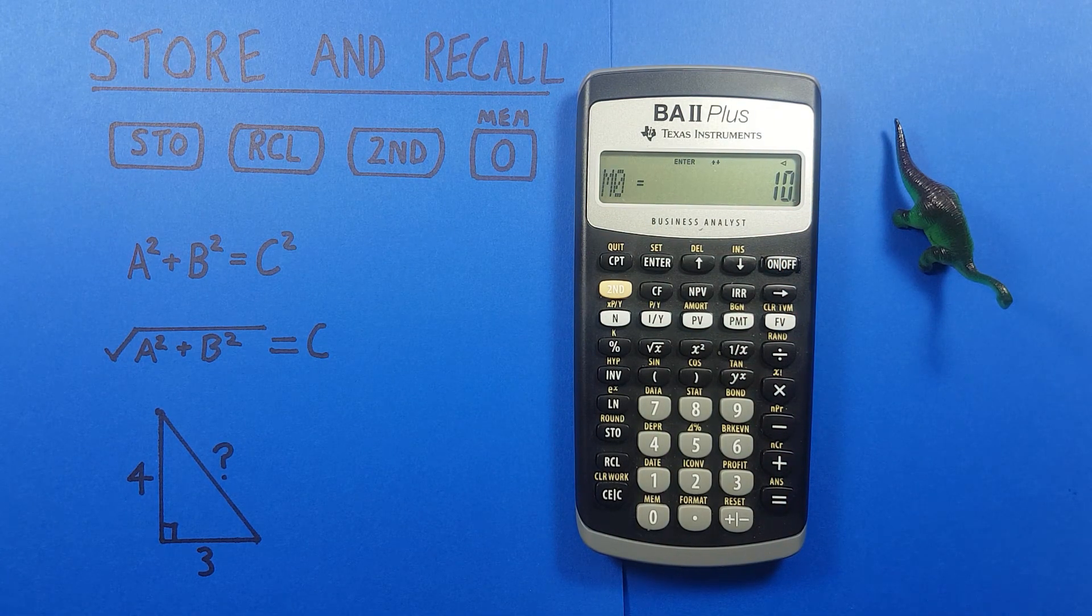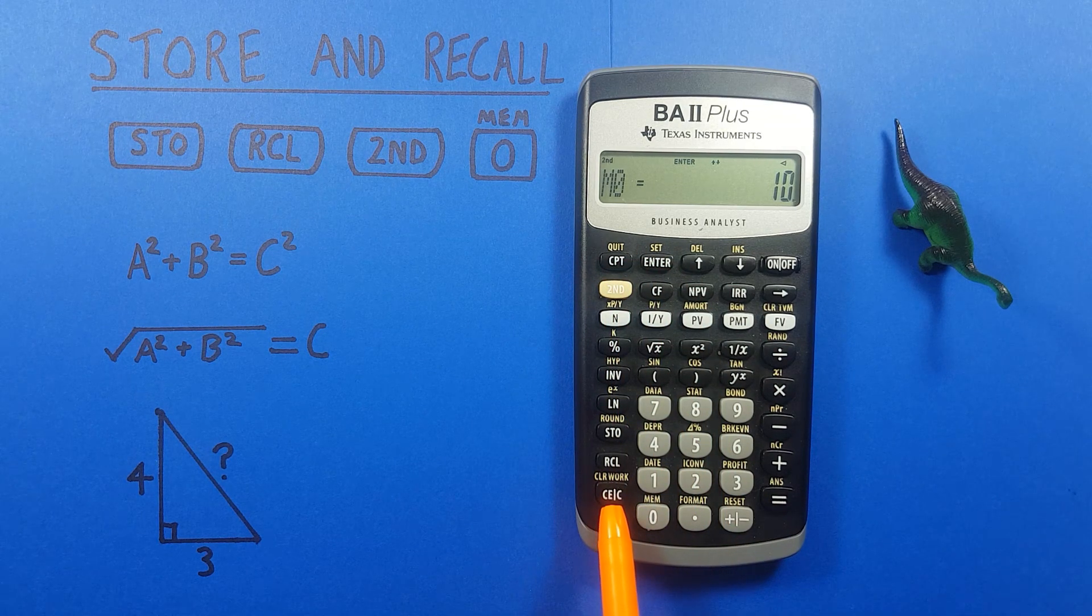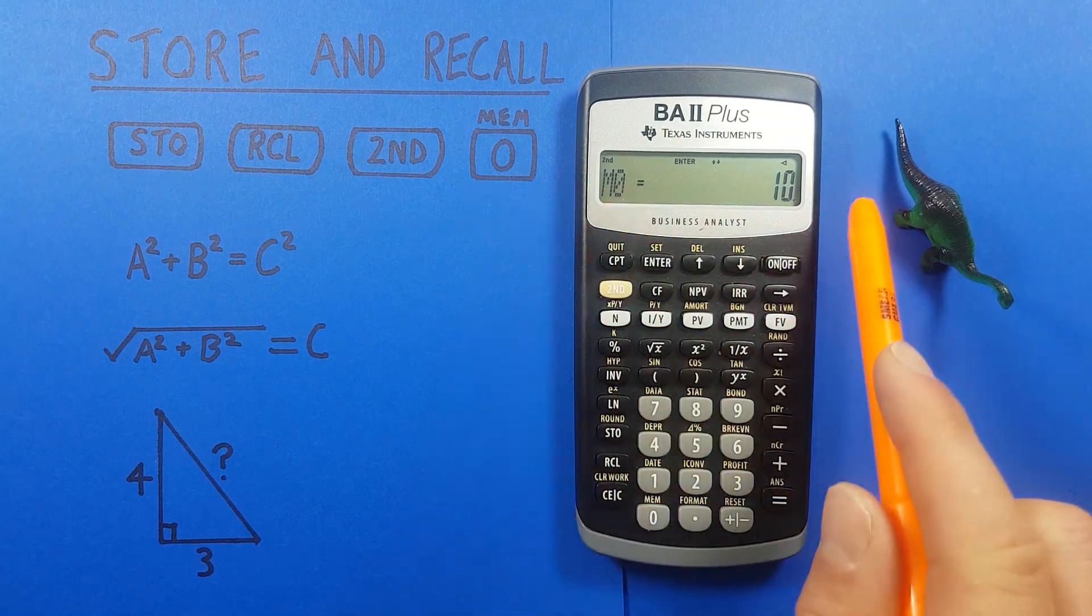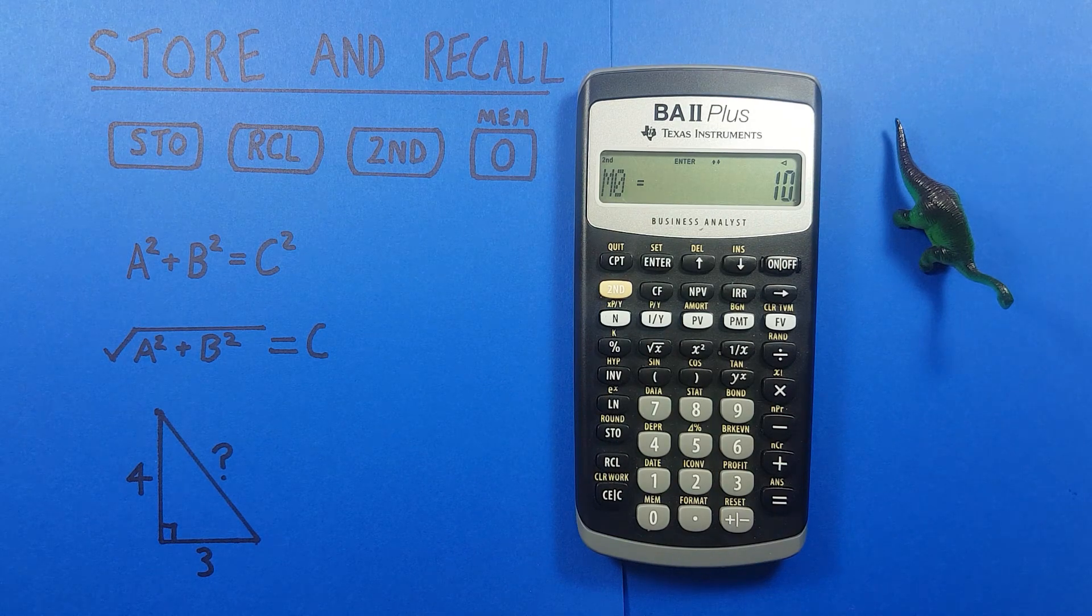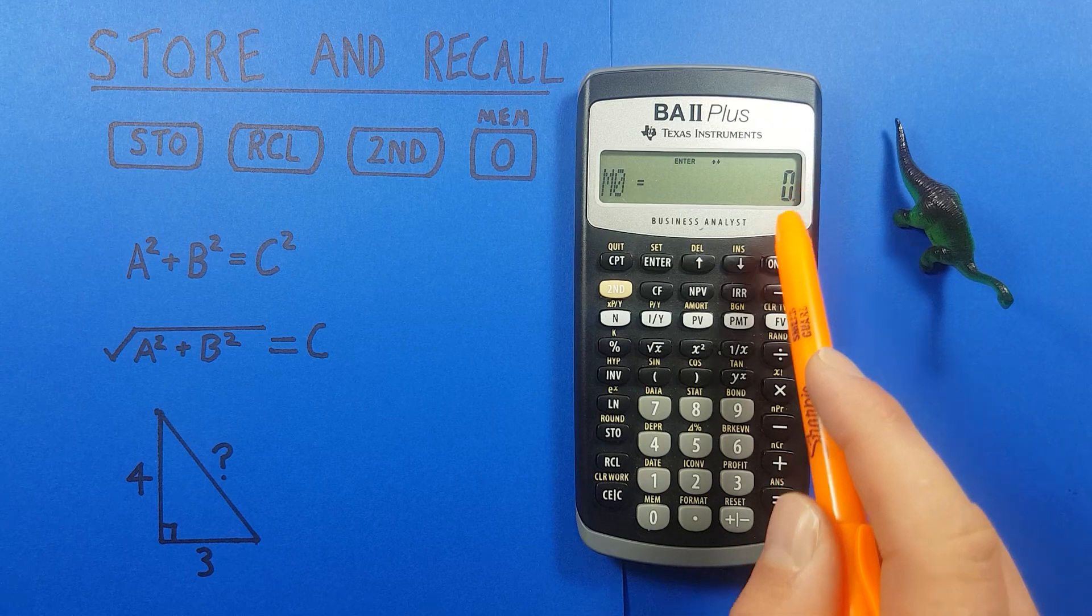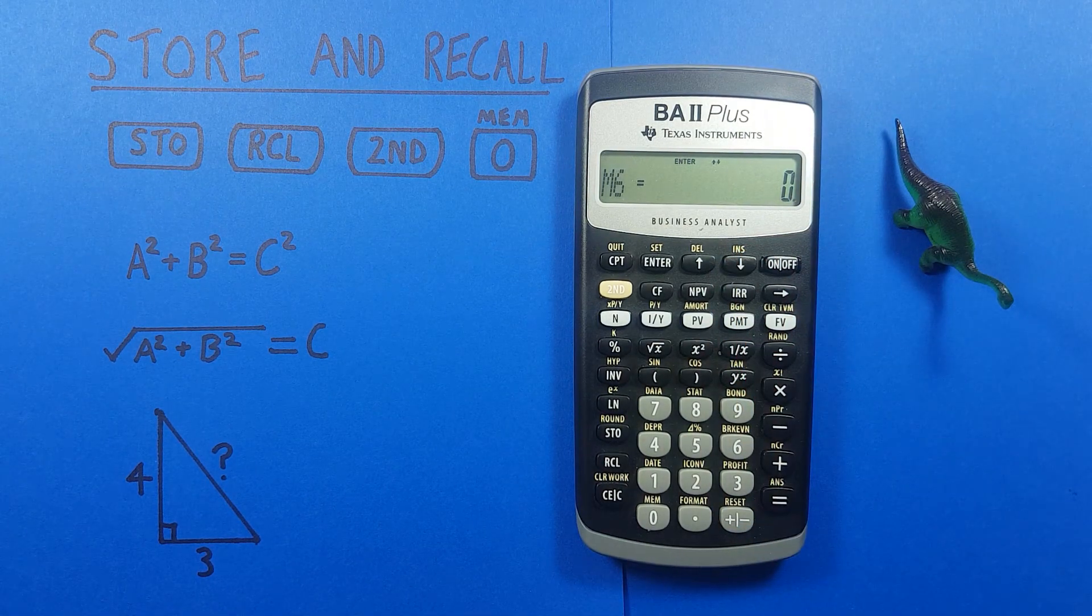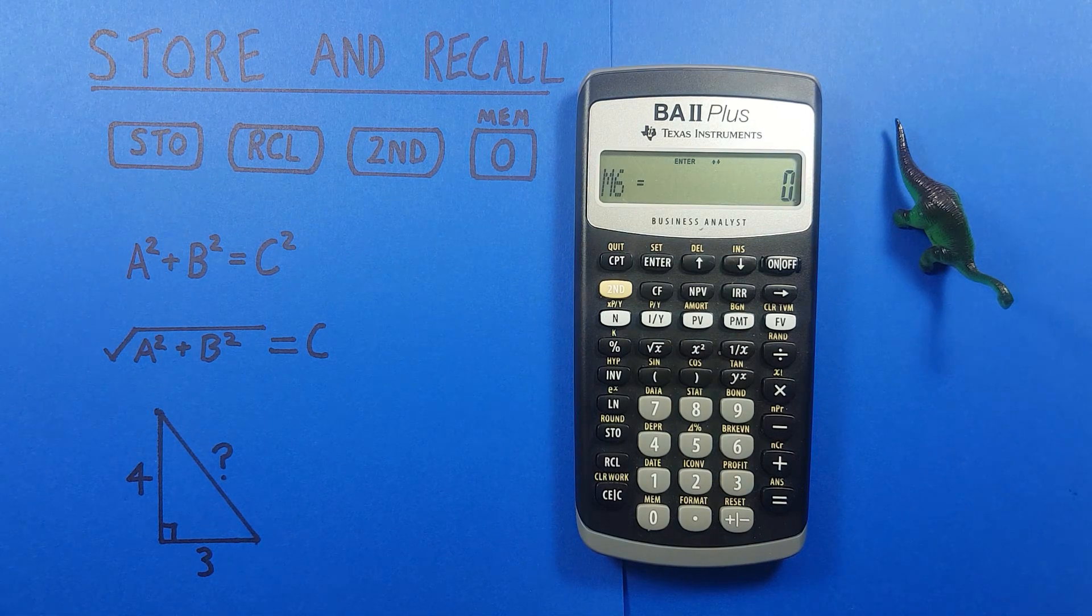We can clear these memory slots by pressing 2nd CE, or clear work, which will clean the memory slots but not get rid of anything else. So we press that. Now we see M0 is equal to 0. And if we keep scrolling through, we'll see all our memories are 0. And we're ready to store new numbers in there.